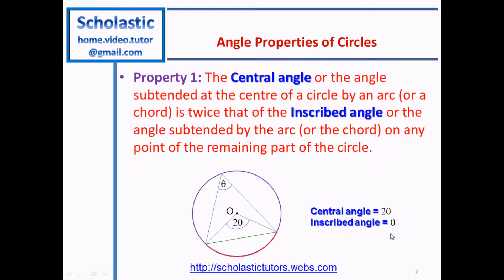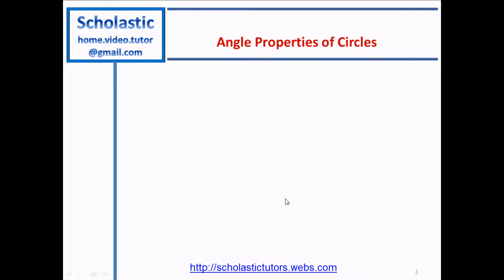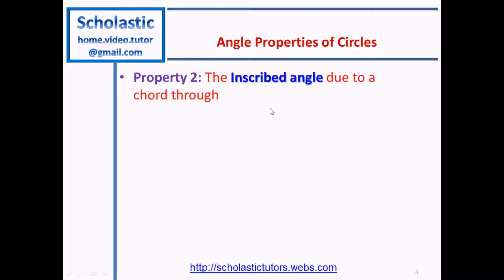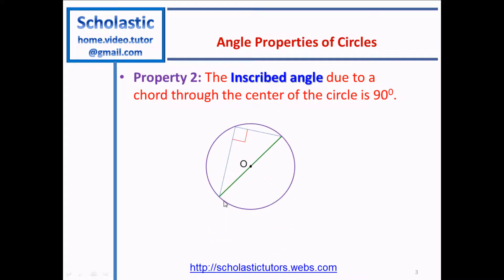Property 2: the inscribed angle due to a chord through the center of the circle is 90 degrees. In this case the chord is going through the center, so it becomes a diameter. The inscribed angle subtended by this diameter is 90 degrees. Wherever you draw a triangle from the circle to this diameter, you will always get 90 degrees.